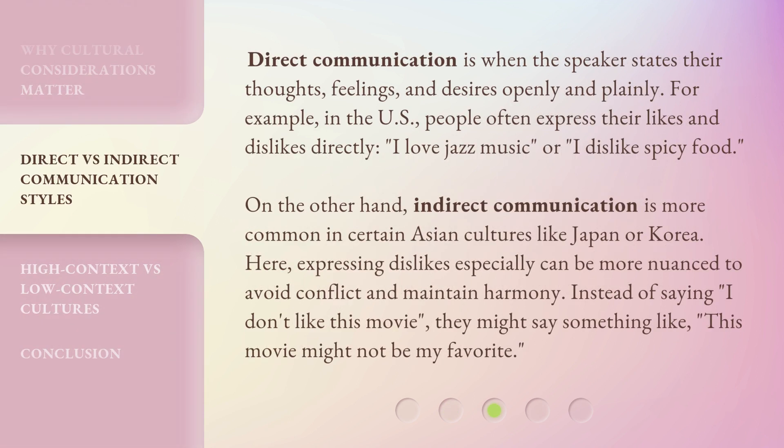Direct communication is when the speaker states their thoughts, feelings, and desires openly and plainly. For example, in the US, people often express their likes and dislikes directly — 'I love jazz music,' or 'I dislike spicy food.' On the other hand, indirect communication is more common in certain Asian cultures like Japan or Korea. Here, expressing dislikes especially can be more nuanced to avoid conflict and maintain harmony. Instead of saying 'I don't like this movie,' they might say something like, 'This movie might not be my favorite.'